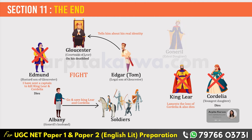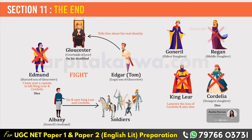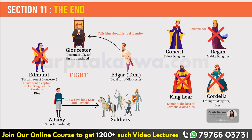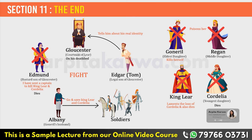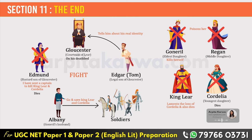Goneril and Regan both wanted to get married to Edmund. For this, Goneril poisons her sister Regan, but when she gets to know that Edmund is also dead, she kills herself too. Even Kent dies. In the end, only two people survive: Albany and Edgar. Albany becomes the King of England. This is how this famous play by William Shakespeare ends — it's a sad ending where most of the characters are dead.